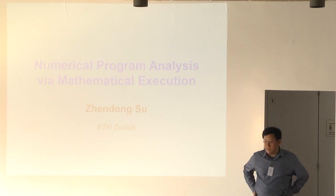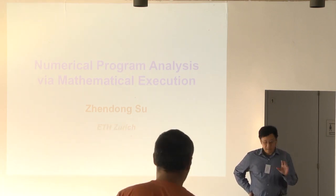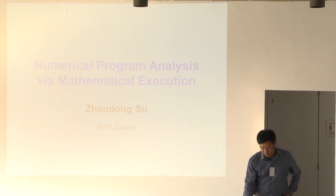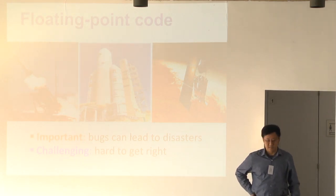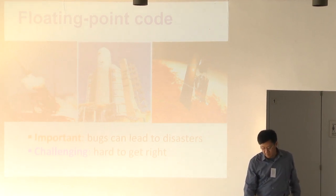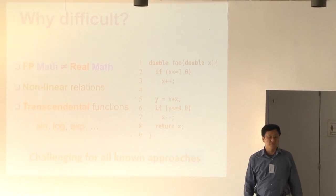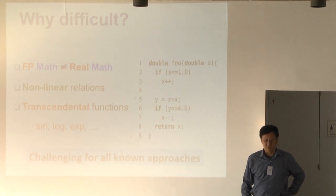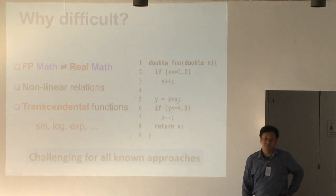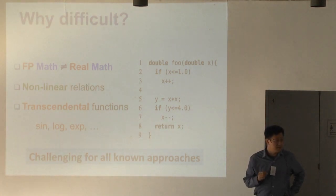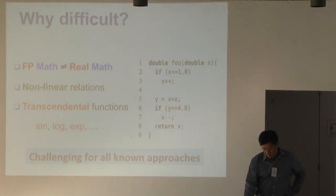The work is about how to analyze numerical software and we introduced this analysis concept called mathematical execution. Floating point software is everywhere, they're important, bugs in them can cause little disasters and they're really hard to get right. Why they're hard to get right is because floating point arithmetic is very different from semantics in real numbers that we're used to. If you look at this piece of code here on the right, it looks very simple but if you're trying to generate inputs to cover all the branches, it's actually very tough and pretty much all existing known approaches will find this challenging. So now we have this very important problem, very hard, how should we try to make some progress.